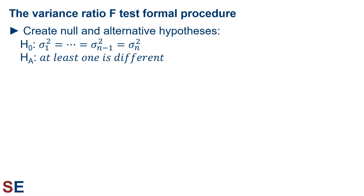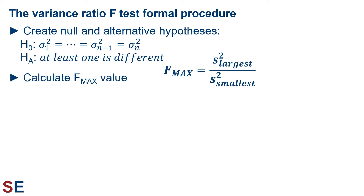Let's look at the formal procedure for doing an F-max test. First, as with every statistical test, we set up null and alternative hypotheses. The null hypothesis is that the population variances are equal: the variance of population 1 equals the variance of population 2 equals the variance of population 3, and so on. If we're doing this test as a pretest before an ANOVA, this is the result we would want. The alternative hypothesis is that the population variances are not equal — the variance of at least one population is different from at least one of the others. The next step is to create our test statistic, the F-max value, by calculating all sample variances and dividing the largest by the smallest.